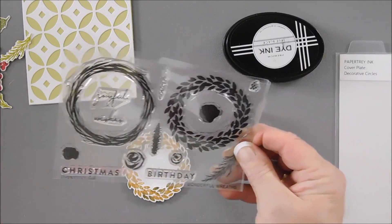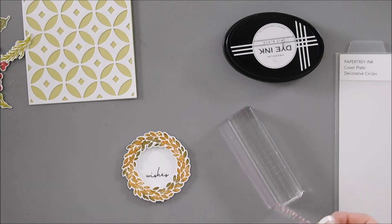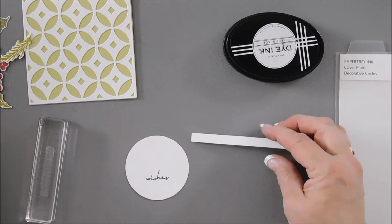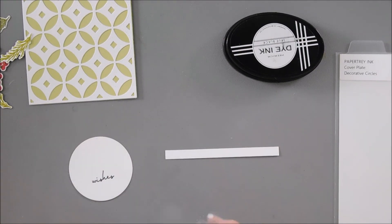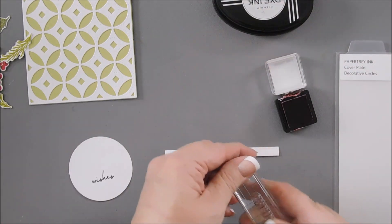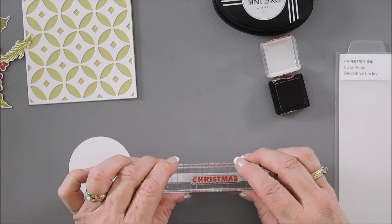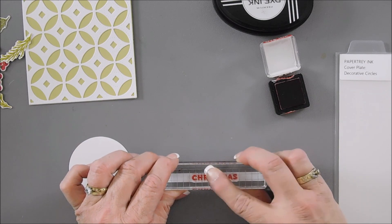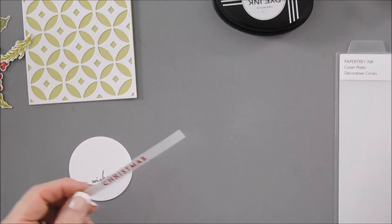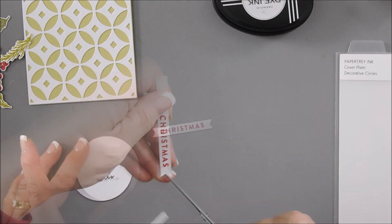Now we have Christmas and birthday. So you can make your real pretty birthday wreath. There's holiday. I'm going to take Christmas. I'm going to pick it up with my acrylic block. And then I have a strip of white cardstock here. I'm going to stamp my Christmas with my poppy ink. I'm going to stamp it in the middle because I'm going to fishtail the ends. Wonderful. I'm going to use my scissors and we're just going to fishtail, create a fishtail banner on the left and right.